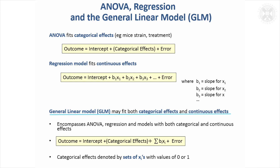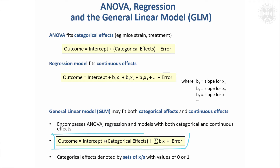The general linear model, often called a GLM, allows you to fit both categorical effects — groupings of the data — and continuous effects. It encompasses ANOVA, regression, and models that have both categorical and continuous effects. The categorical effects could be denoted by X's taking values of 0 or 1, but essentially it all fits into this general linear modelling framework.